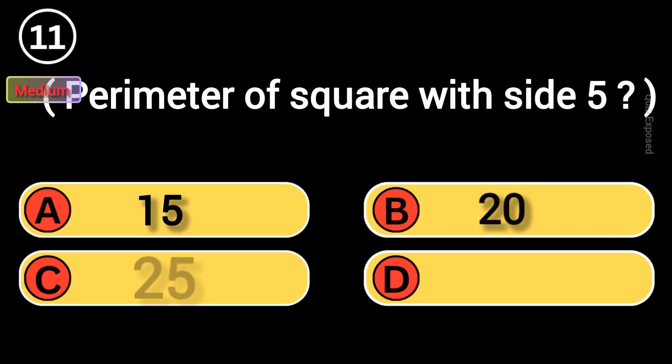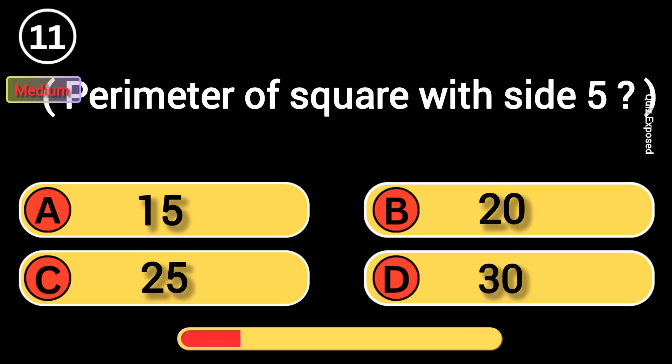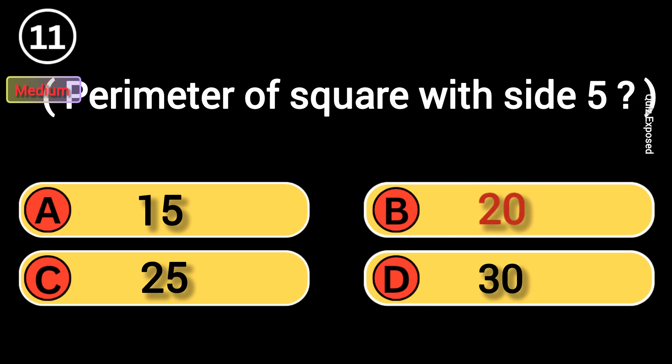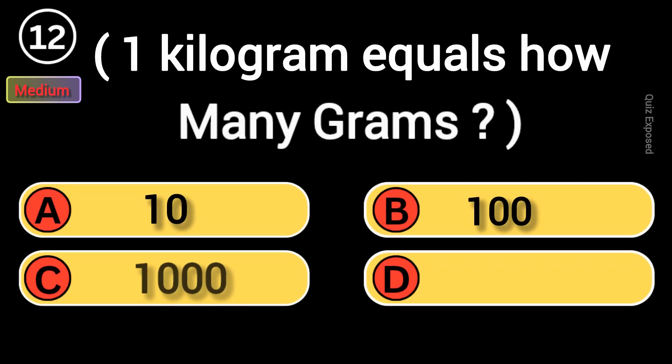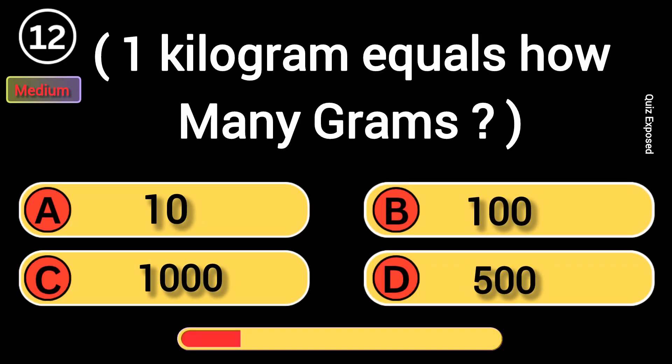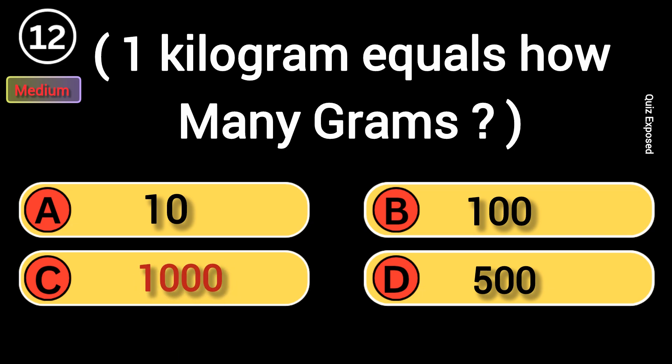Perimeter of square with side 5? Correct, 20. Kilogram equals how many grams? 1000 is correct.